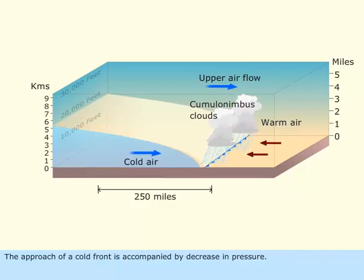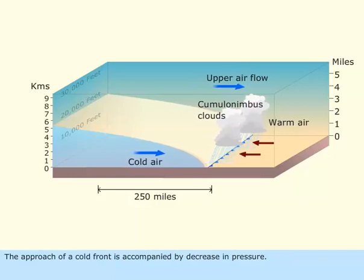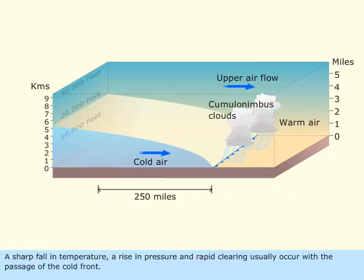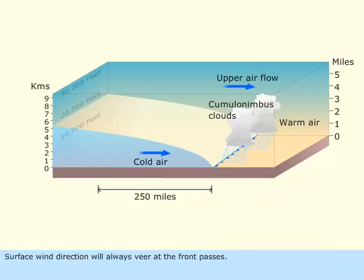The approach of a cold front is accompanied by a decrease in pressure. A sharp fall in temperature, a rise in pressure, and rapid clearing usually occur with the passage of the cold front. Surface wind direction will always veer as the front passes. Gustiness may be associated with the wind shift.